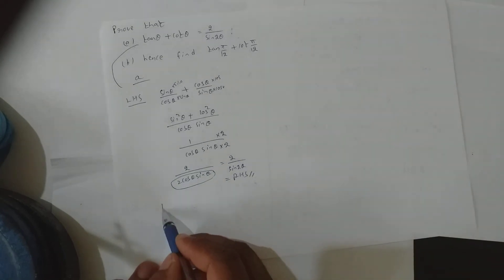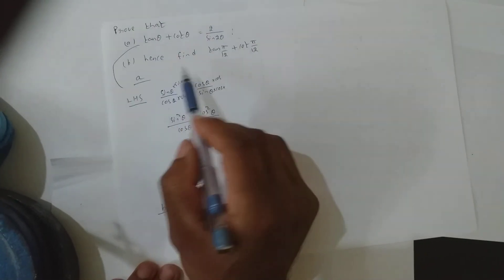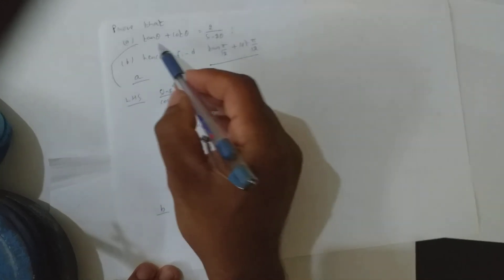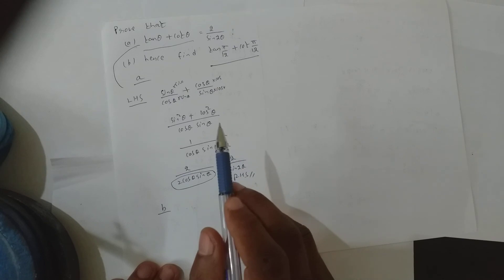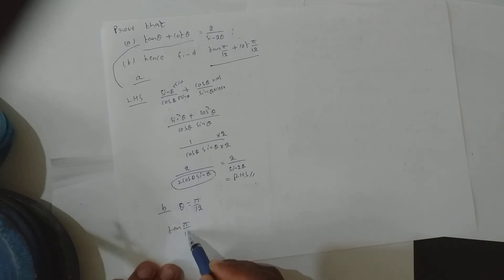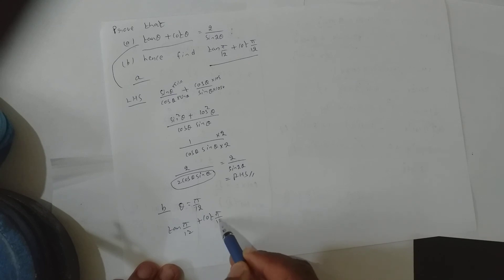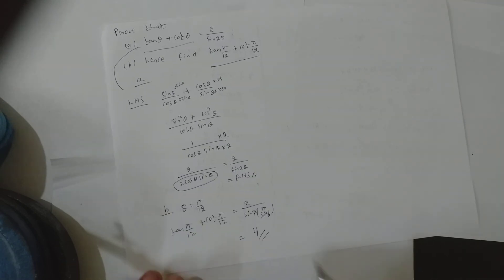Now look at part b. Hence find tan(π/12) + cot(π/12). Replace θ = π/12 in the first part result. So tan(π/12) + cot(π/12) = 2/sin(2 × π/12) = 2/sin(π/6). Place this in the calculator and you will get the result to be 4.